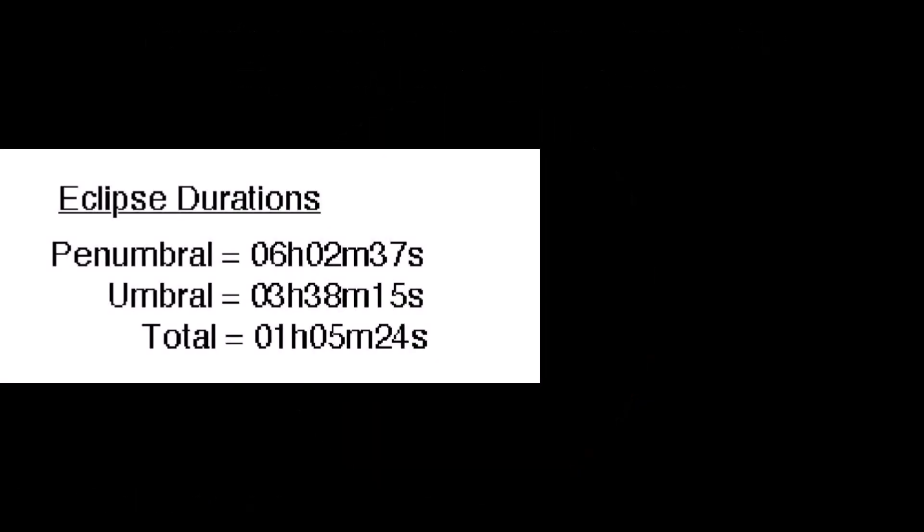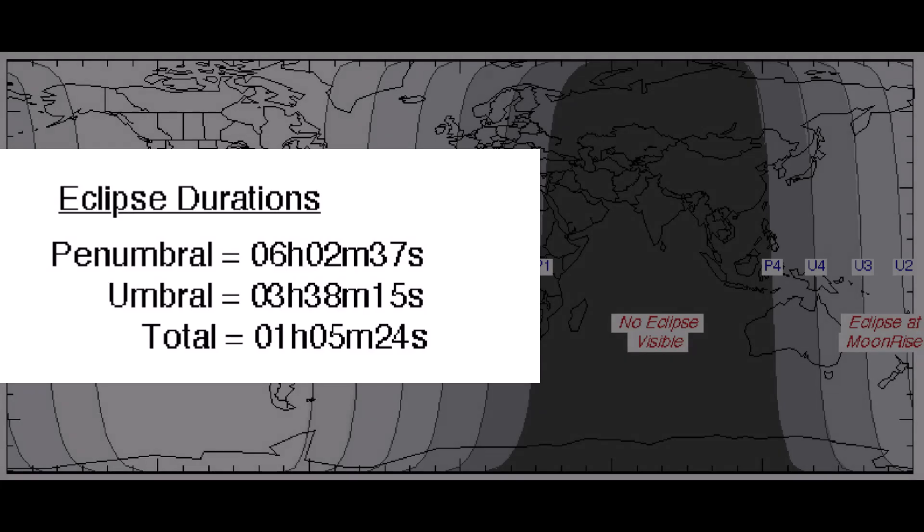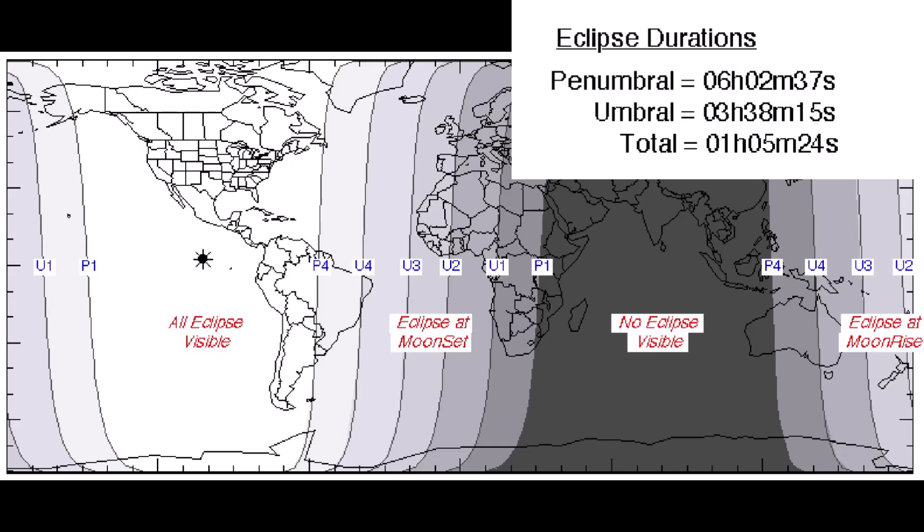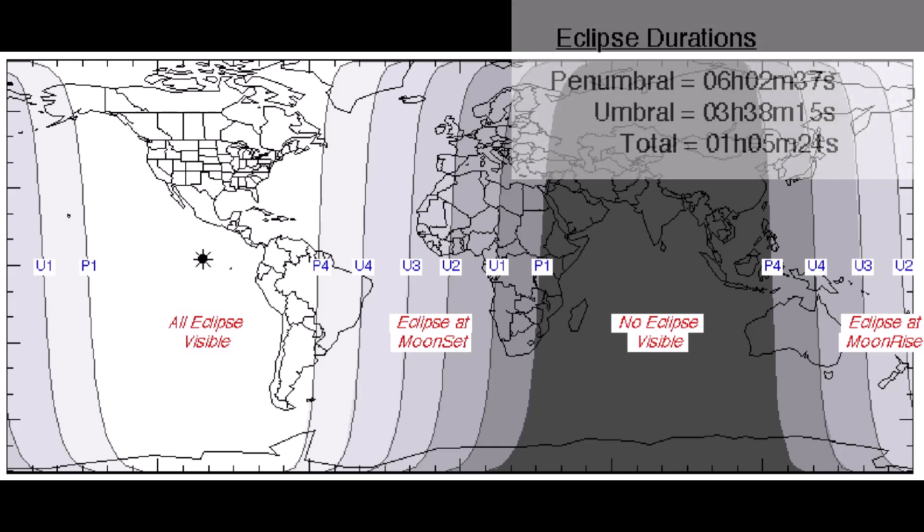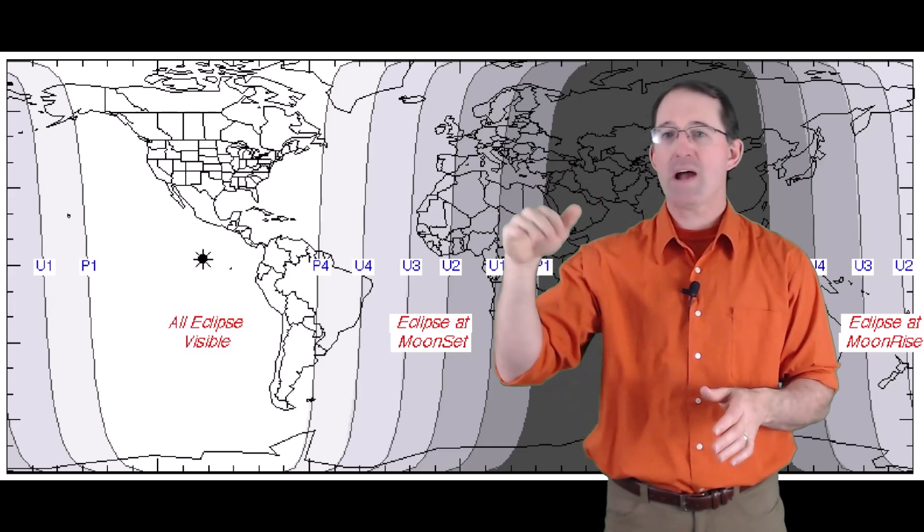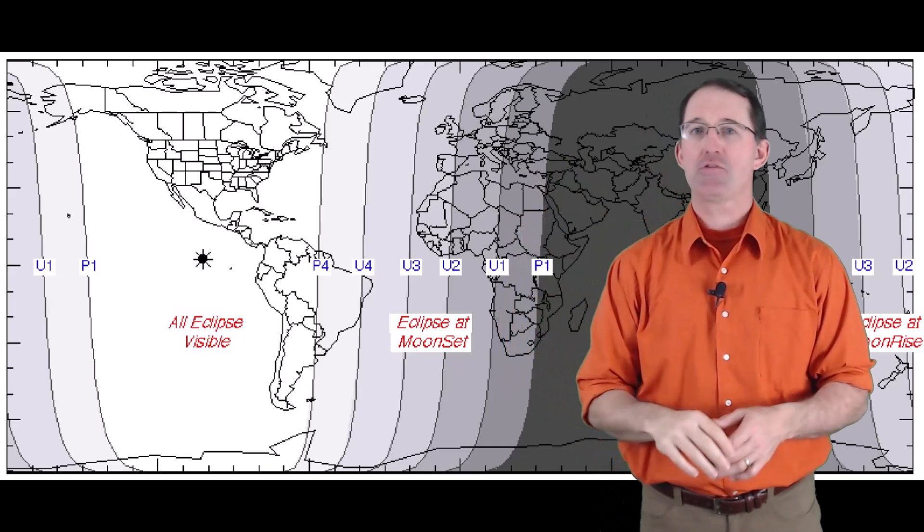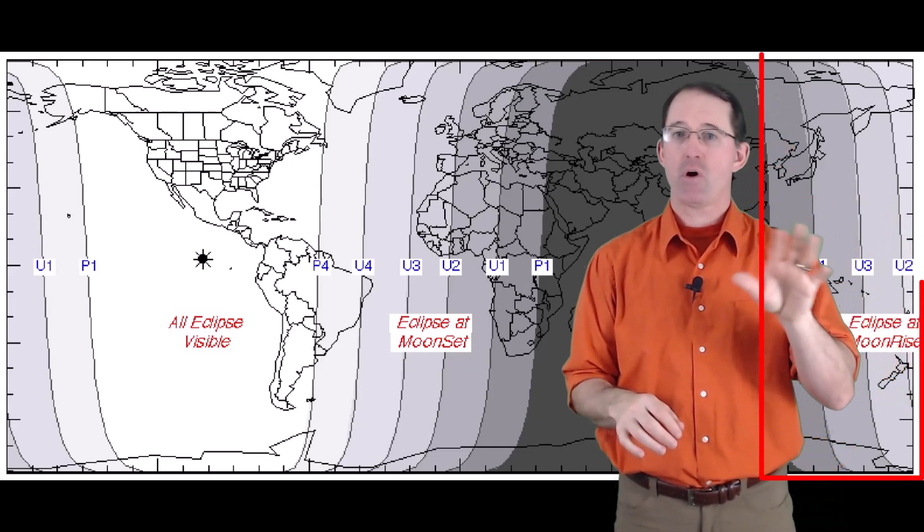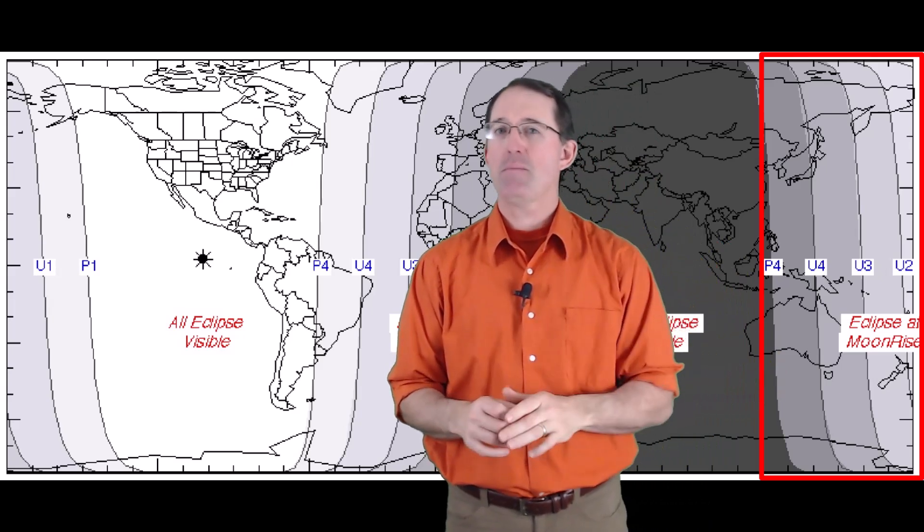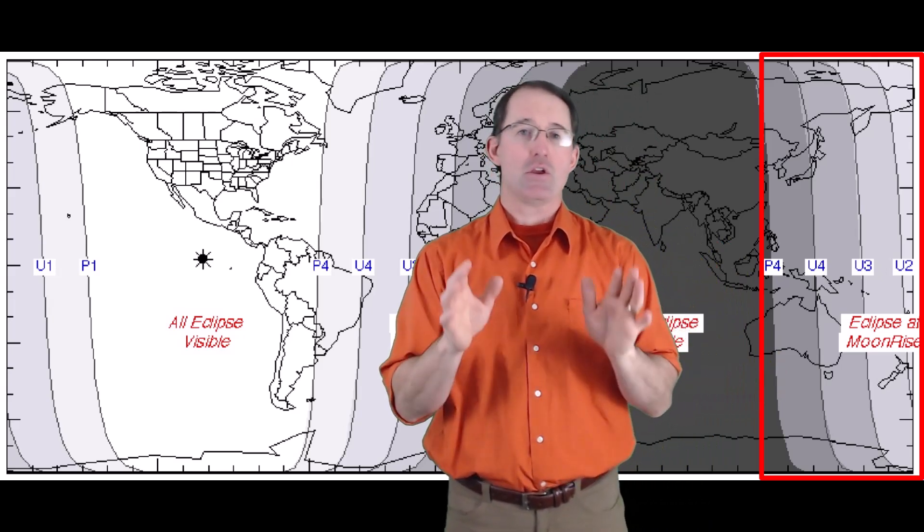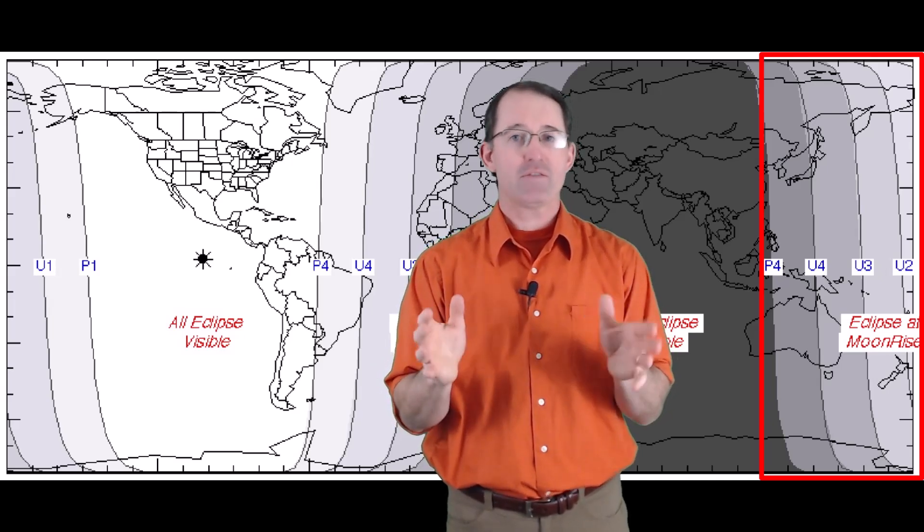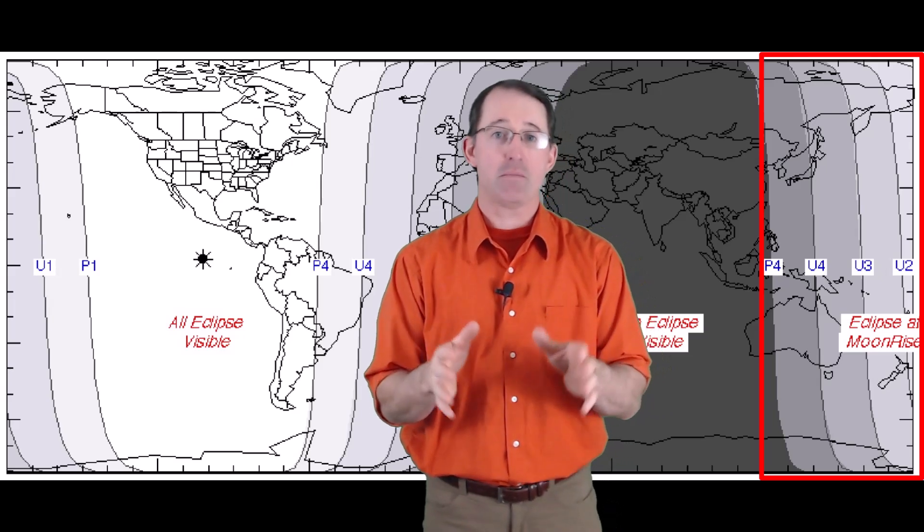Lunar totality will last for over an hour and five minutes across the entire western hemisphere, and the moon will be high in the sky for pretty much all of those observers as well. A few of you over in western Europe with low horizons might be able to catch part of the eclipse as the moon is setting in the morning, but those of you in far eastern Russia or Australia just know that this map may be deceiving. You're only going to get a partial eclipse as the moon rises in the evening, so the western hemisphere truly is the place to be for this eclipse.